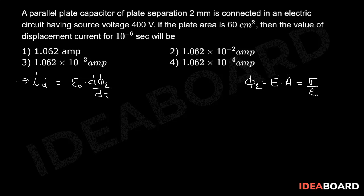That will be q by epsilon naught, which you can also write as q, the charge on the capacitor at any given instant, equal to the product of capacitance into potential difference across the capacitor divided by epsilon naught.